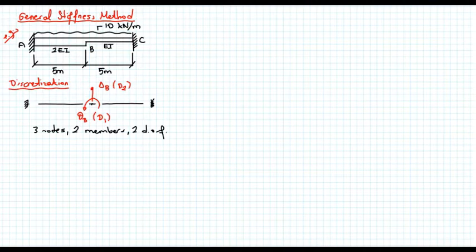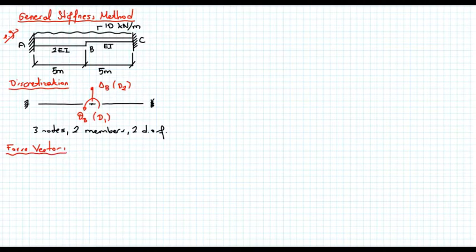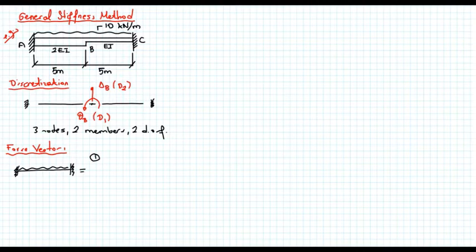Now the force vector — let's determine that. In order to obtain the force vector, we have to do superposition. This is our original structure. Step one, or the first case, is the no-deformation case where all degrees of freedom are equal to zero. Remember that this is also our starting point in the moment distribution method.